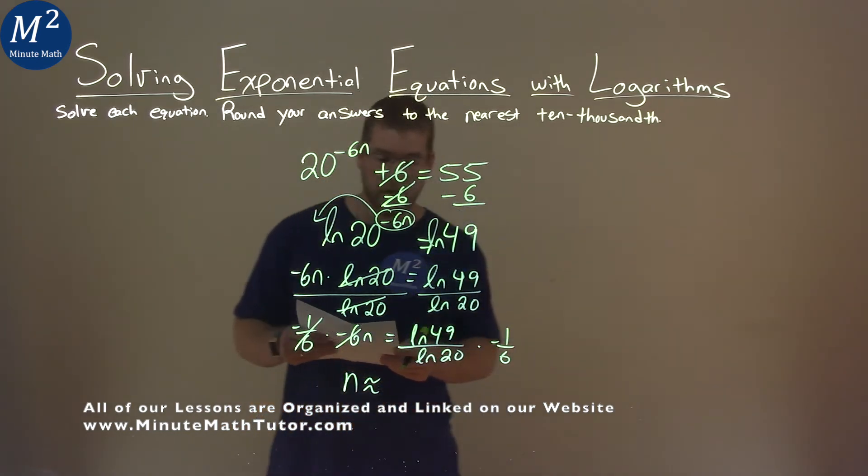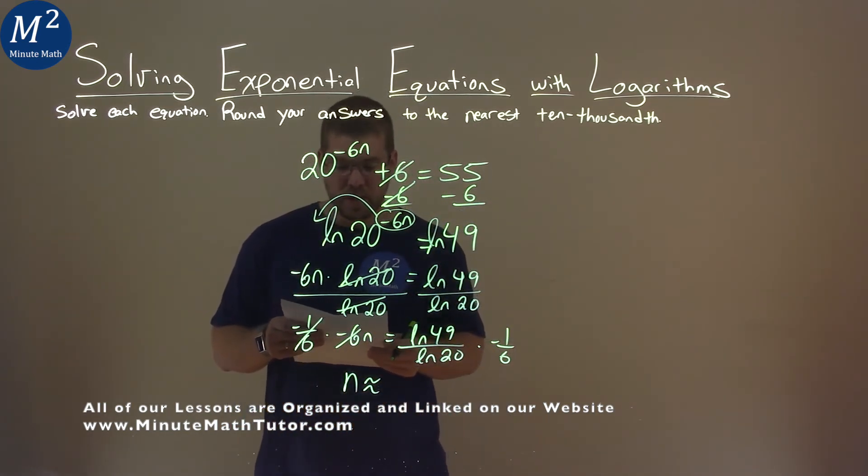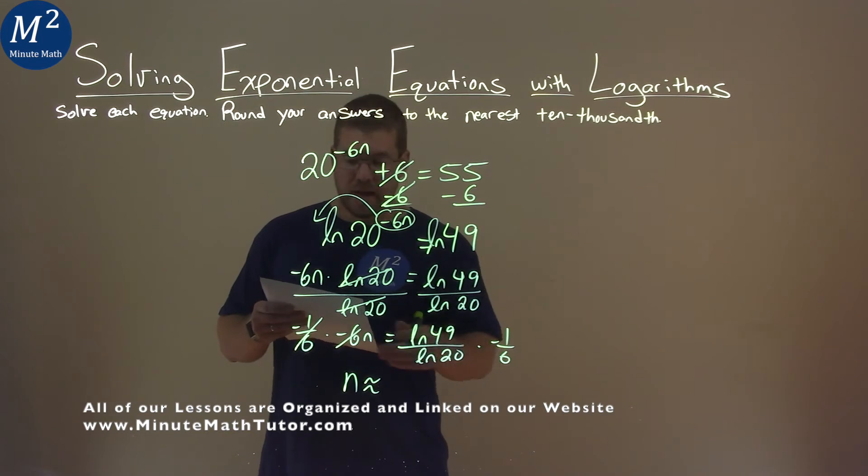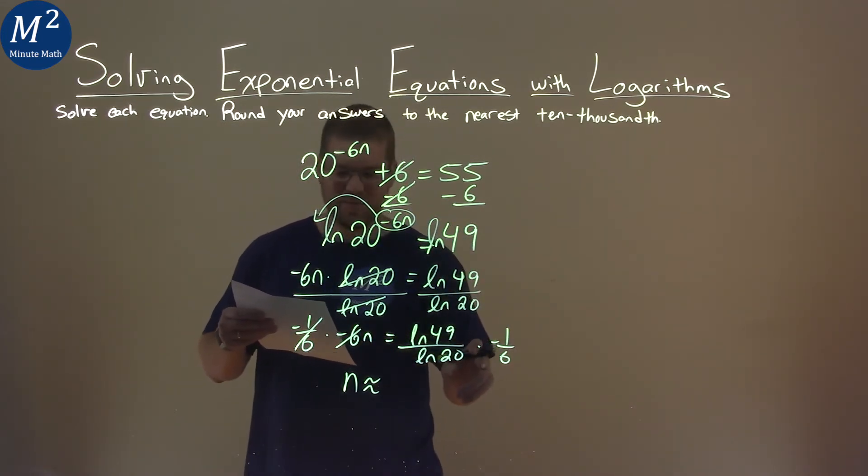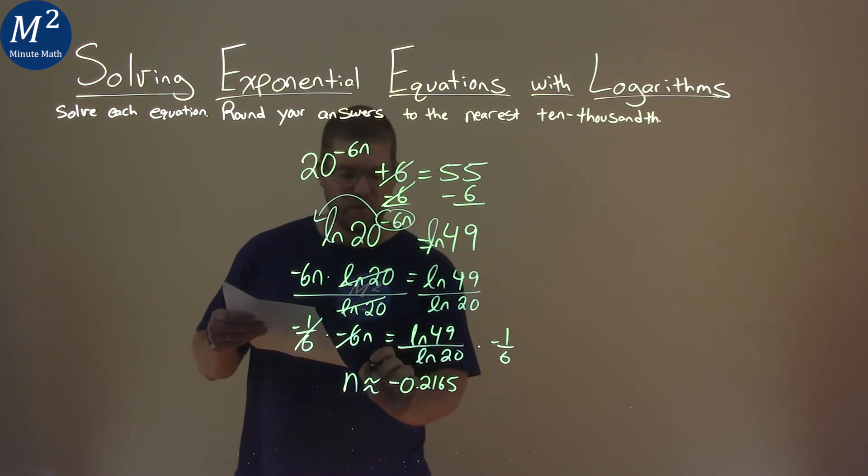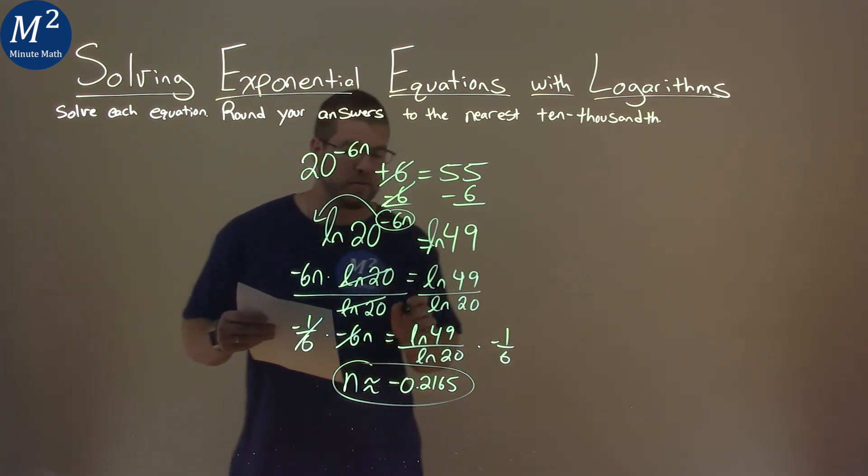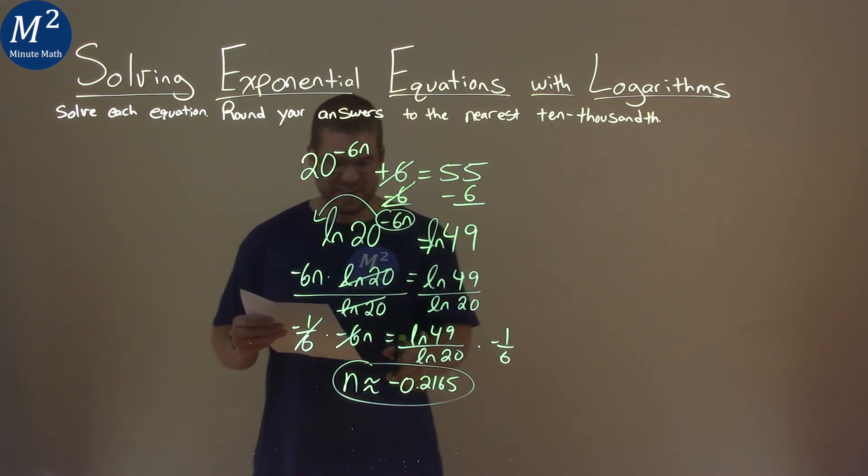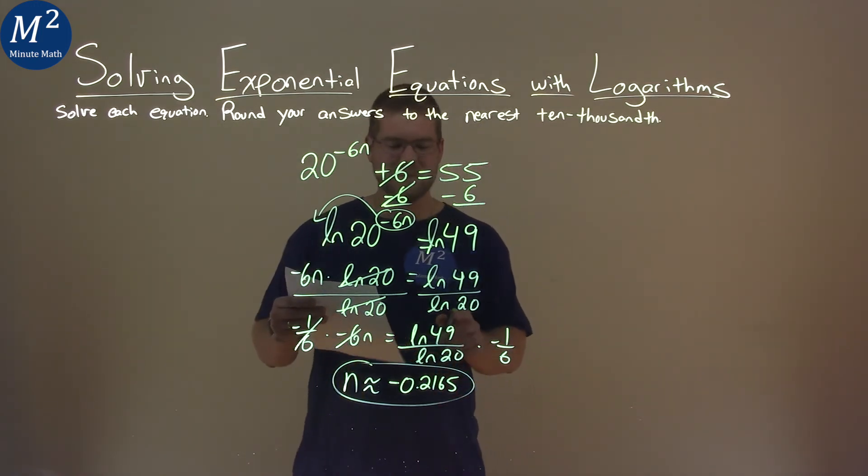Natural log of 49 over natural log of 20 times negative 1/6—make sure I've got my spot here—times negative 1/6 here, gives us an approximate answer of negative 0.2165. And so our final answer here is approximately equal to negative 0.2165.